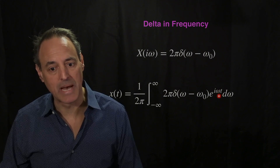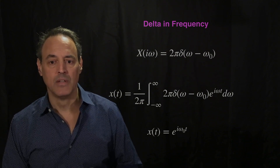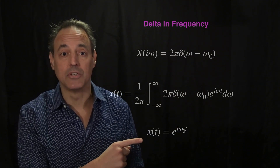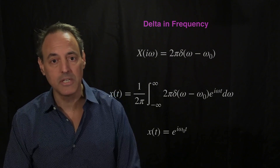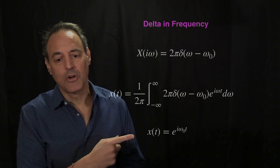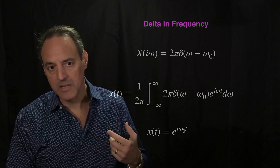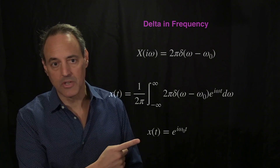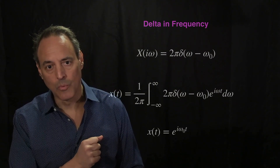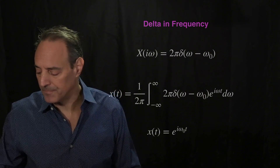The 2π cancels and what you end up with is just e to the i ω₀ t. That delta function in the frequency domain results in e^(iω₀t) as the signal in the time domain — a pure tone, an oscillation. Remember this is cos(ω₀t) + i sin(ω₀t). So if you kick the system at a very specific frequency, it generates oscillations only at that frequency back in the time domain. This is just formally walking through the inverse Fourier transform from frequency domain to time domain.